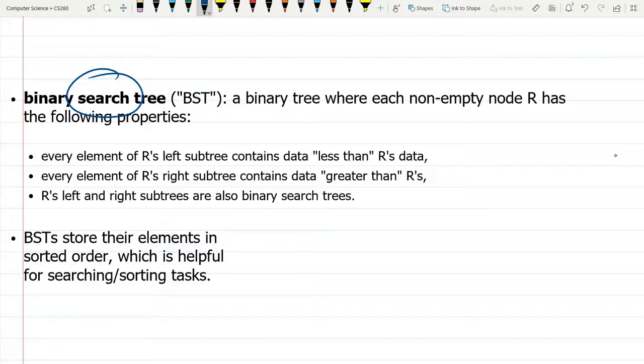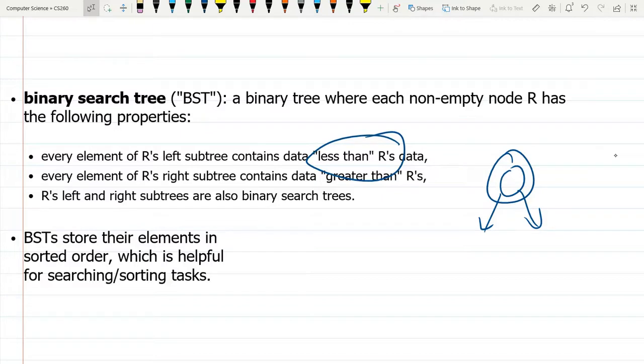It's a tree, a binary tree, which basically means that every node has two child nodes, a left and a right. Except now, with this binary search tree, every left node has to be less than the current node's data, and every node on the right has to be greater than the current node's data.